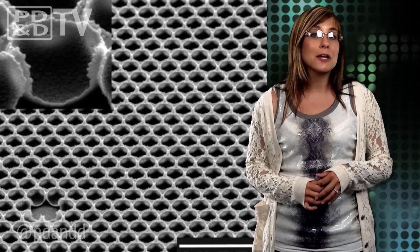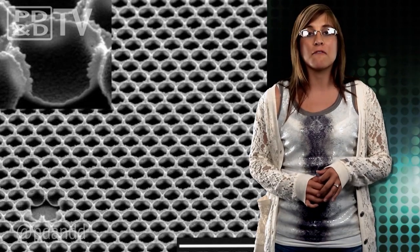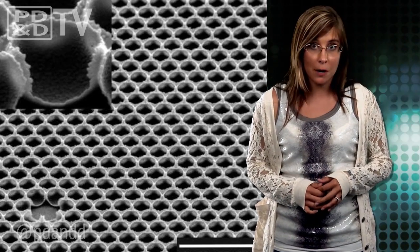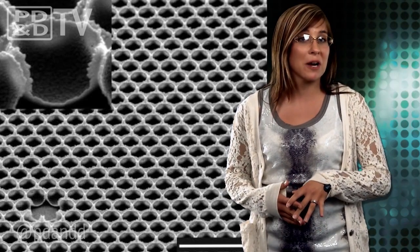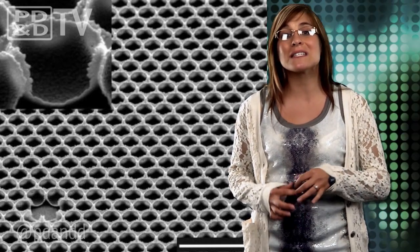To create a SLIPS-like coating, the researchers corral a collection of tiny spherical particles of polystyrene on a flat glass surface like a collection of ping pong balls. They pour liquid glass on them until the balls are more than half buried in glass. After the glass solidifies, they burn away the beads, leaving a network of craters that resembles a honeycomb. Then they coat that honeycomb with the same liquid lubricant to create a tough but slippery coating.